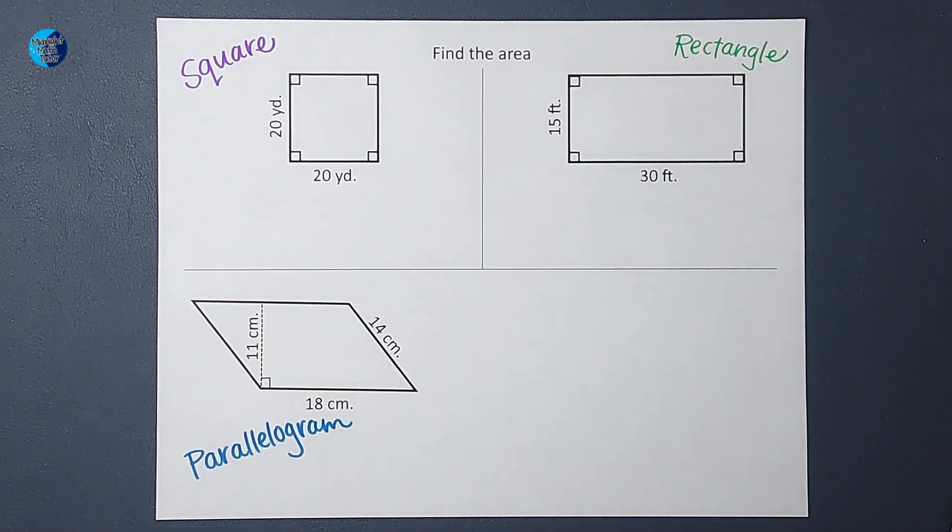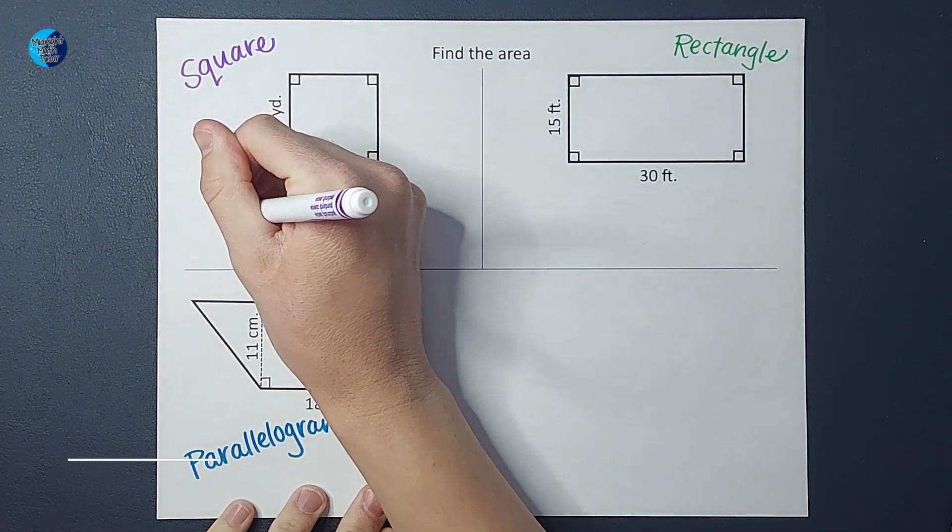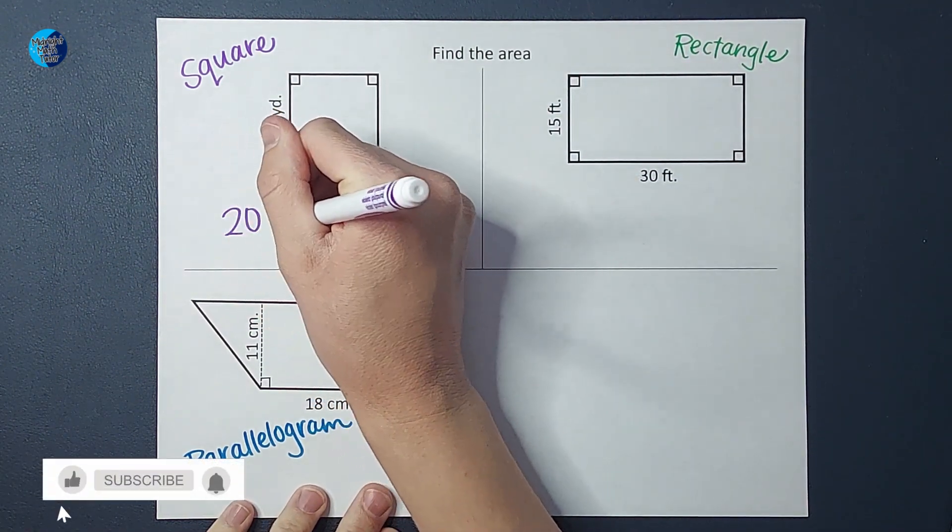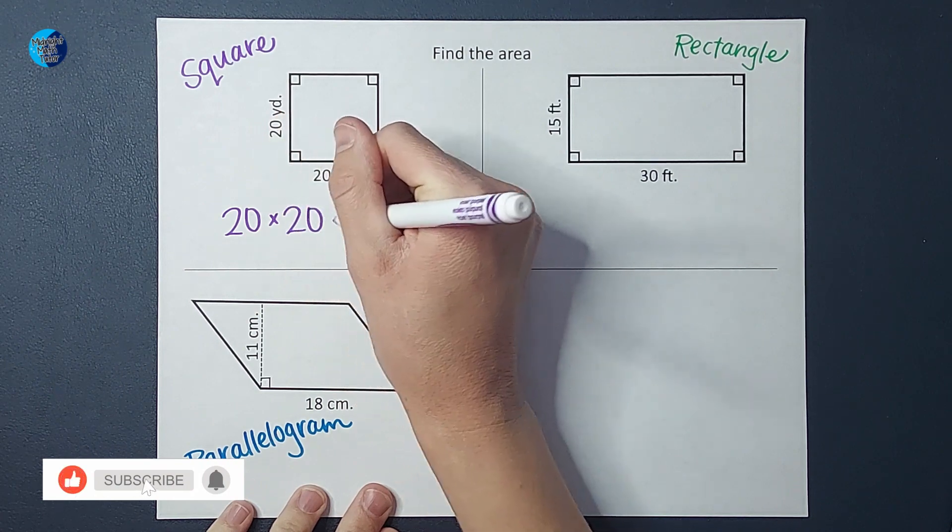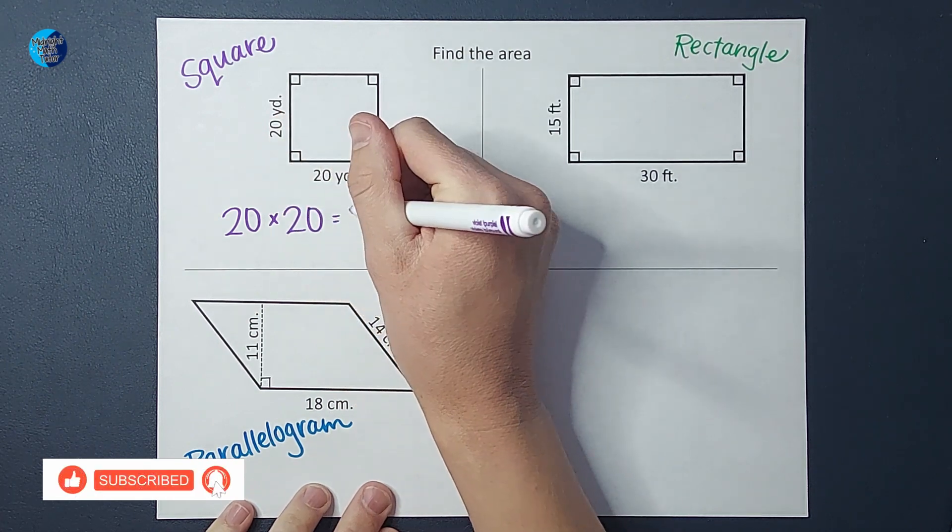So let's start off with the square. Base times height is going to give me 20 times 20, which is going to end up being 400.